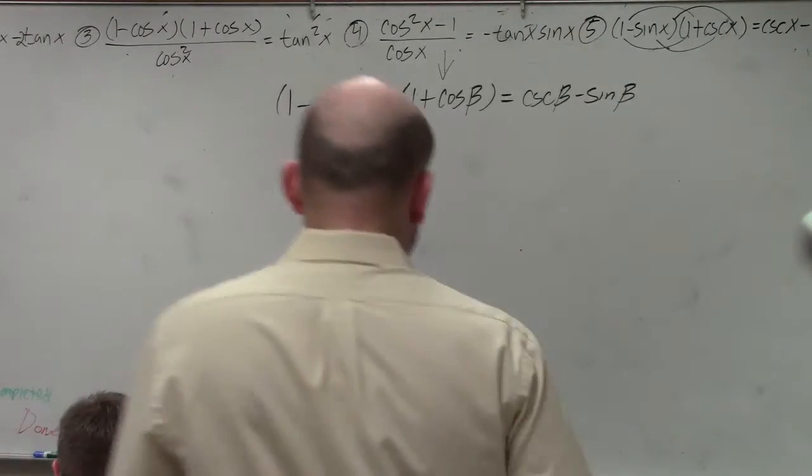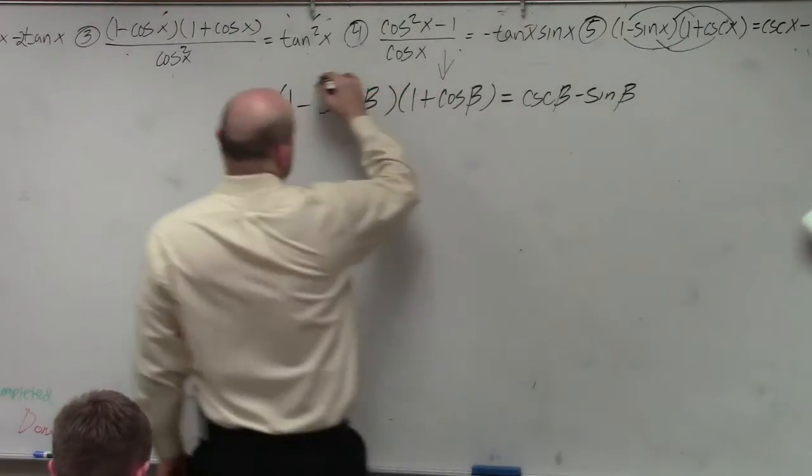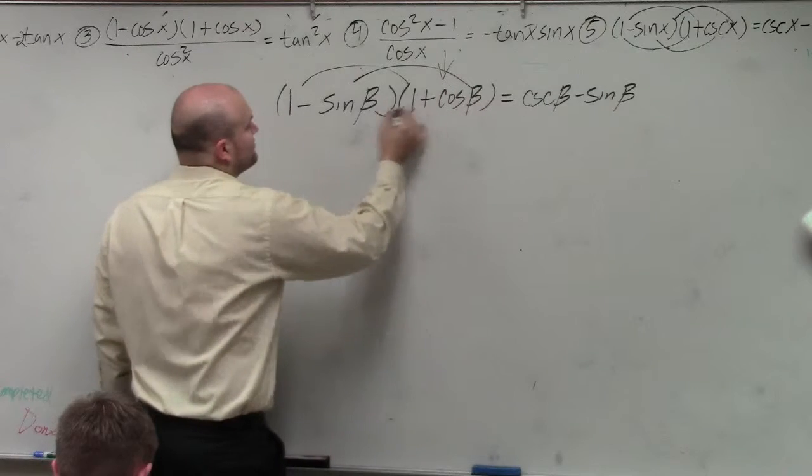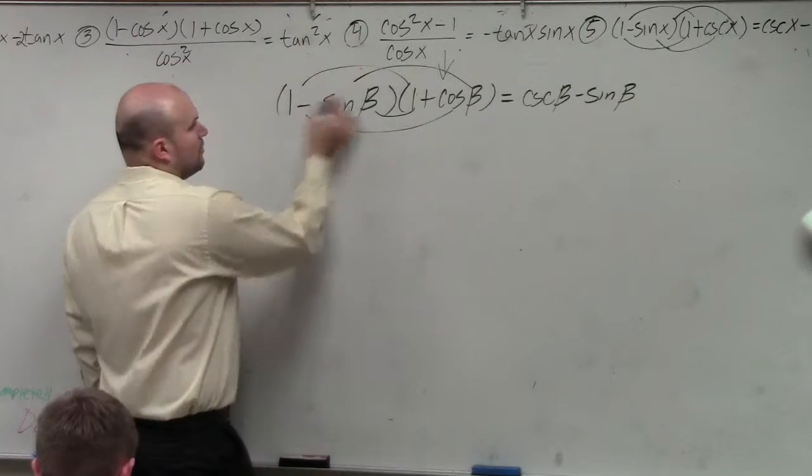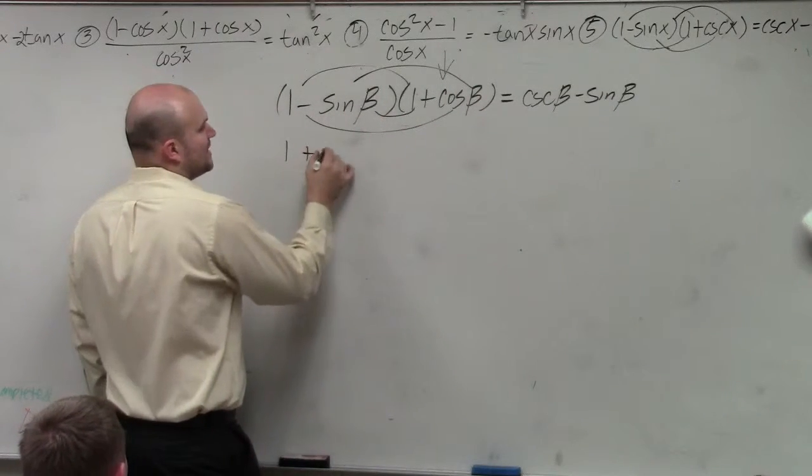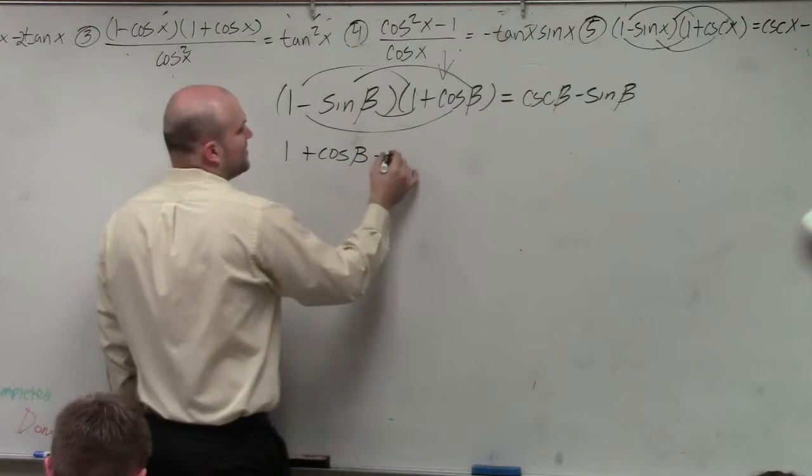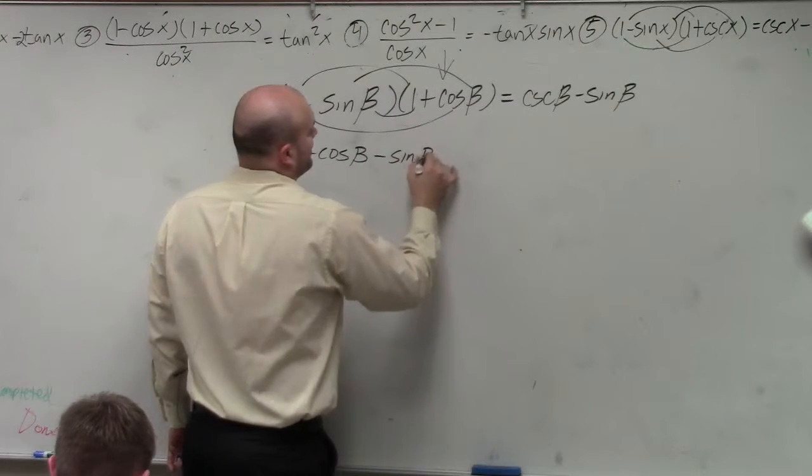I'll do it a little bit quicker though. So it's not a difference of two squares, so I actually have to multiply every single term. So 1 times 1 is 1. 1 times cosine is cosine of beta. 1 times negative sine of beta is negative sine of beta.